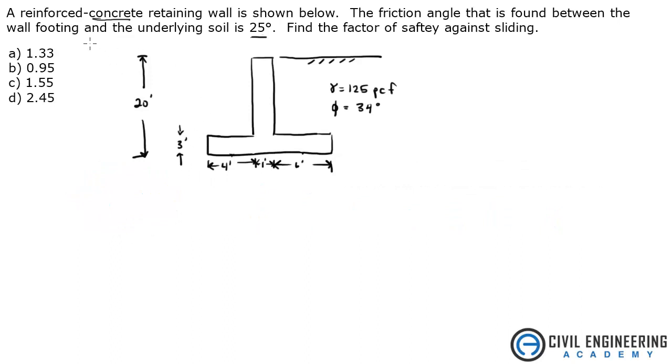Today we're solving a problem from Geotech, a reinforced concrete retaining wall is shown below. The friction angle that is found between the wall footing and the underlying soil is 25 degrees. That's this delta is 25 degrees down here. Find the factor of safety against sliding.